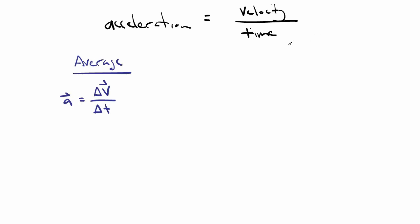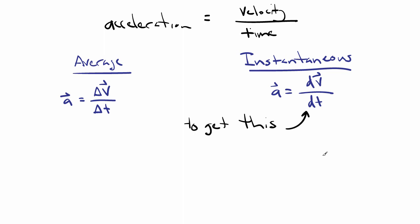The average acceleration is the change in the velocity divided by the time. To get the instantaneous acceleration, we take the derivative of the velocity with respect to time. In order to determine the instantaneous acceleration of an object, we need to be able to describe the functional form of the velocity as it depends on time.